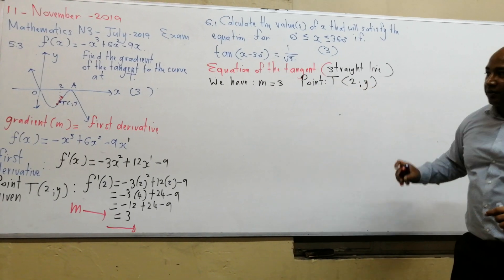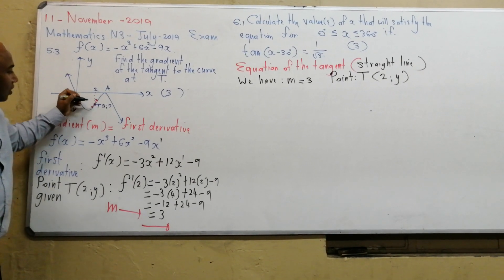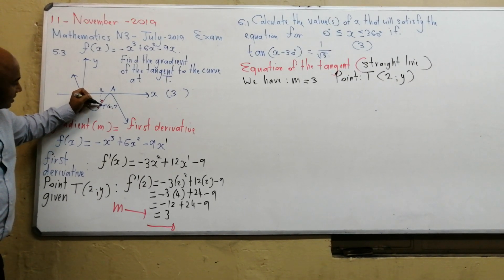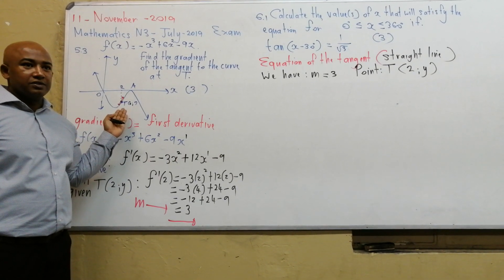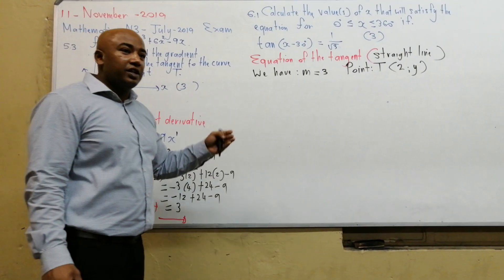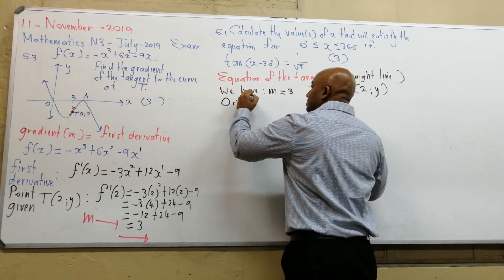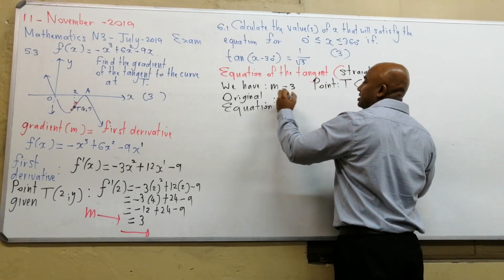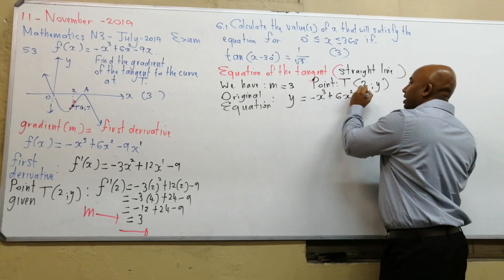Remember, x equals 2 is a point on the cubic graph. If we know x equals 2 and want to find y, we substitute into the original equation — because given x we can find y. The original equation is y equals minus x cubed plus 6x squared minus 9x. We replace x with 2.